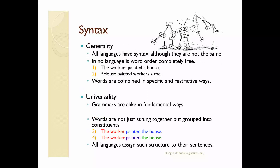One characteristic of syntax is that all human languages have syntax, although they are not the same. One example is the word order of subject, verb, and object in the sentence. Another example is the word order of determiners and nouns in the noun phrase. Every human language has a canonical word order for the sentence or phrase. For example, the canonical word order of an English sentence is subject, verb, object, and in the English noun phrase the determiner, if any, must precede the noun.